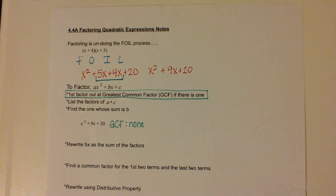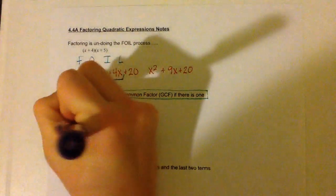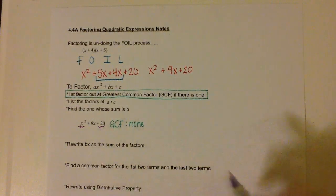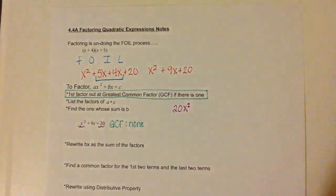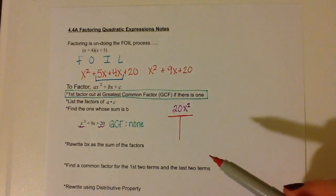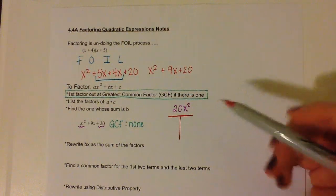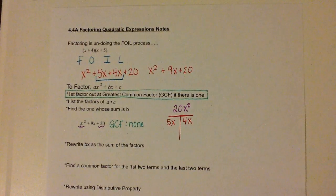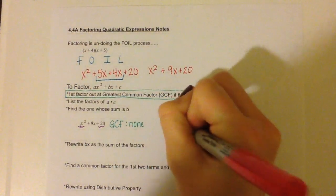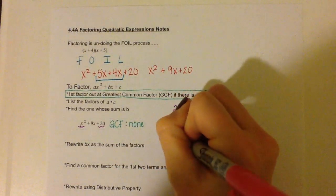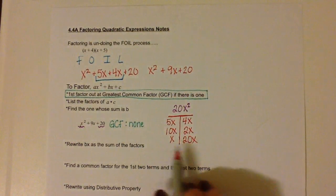The second thing: we are going to list the factors of a times c. Our a is x squared and our c is 20, so if we multiply those, that would be 20x squared. We are going to make our little T chart and list as many things as we can that multiply to give us 20x squared. So we can multiply 5x and 4x, 10x and 2x, or x and 20x.